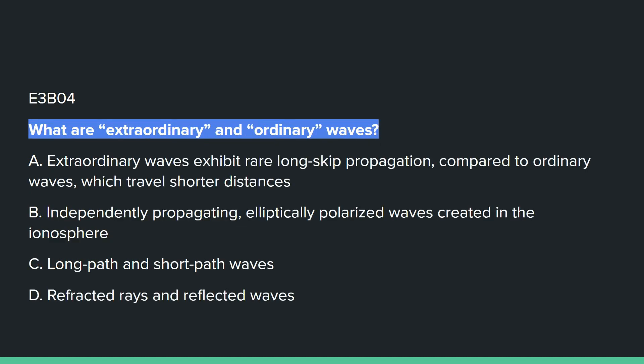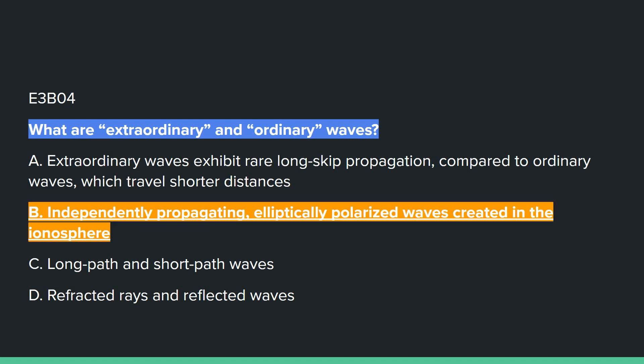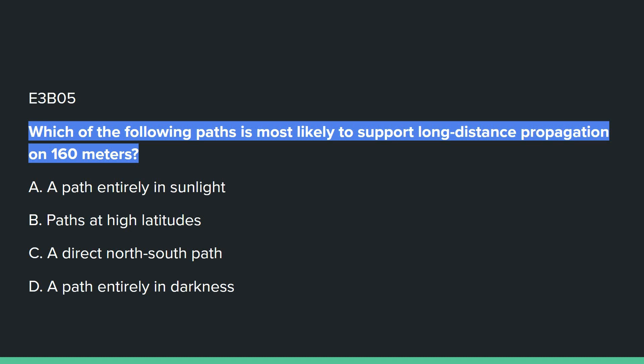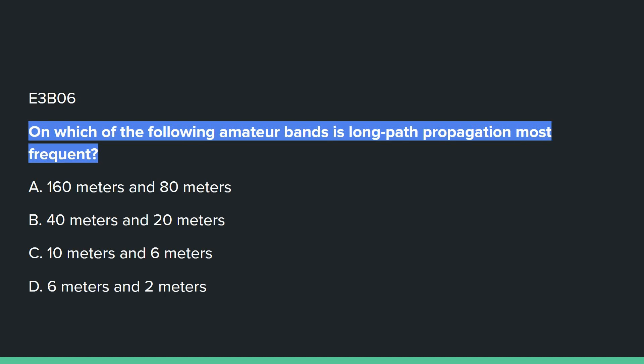E3B04: What are extraordinary and ordinary waves? B: independently propagating elliptically polarized waves created in the ionosphere. E3B05: Which of the following paths is most likely to support long distance propagation on 160 meters? D: a path entirely in darkness. E3B06: On which of the following amateur bands is long path propagation most frequent? B: 40 meters and 20 meters.